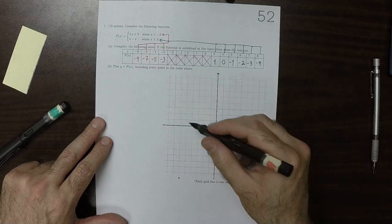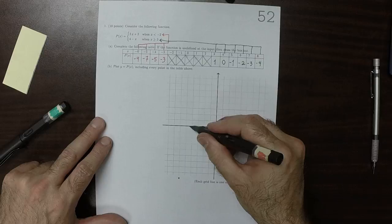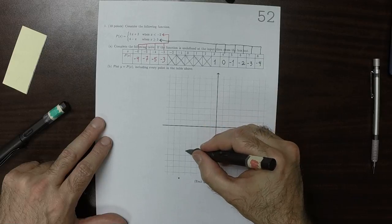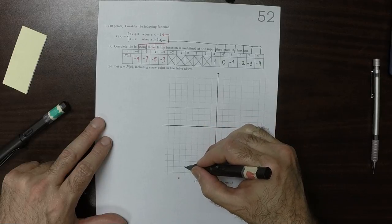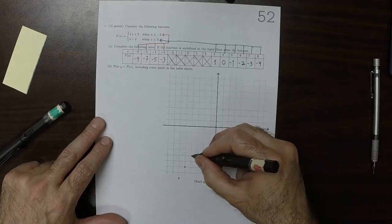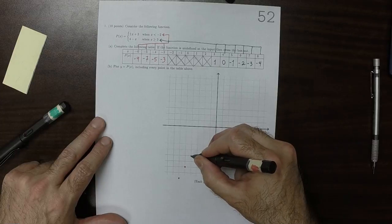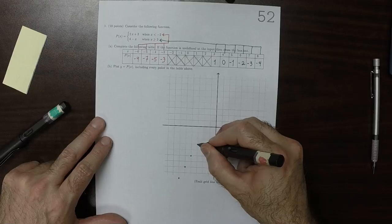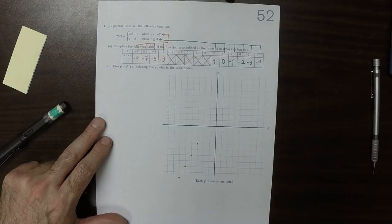So negative 5, negative 7, 1, 2, 3, 4, 5, 2, 4, 6, 7, and then negative 5, and then negative 3. So that's the red points.